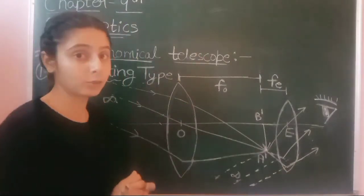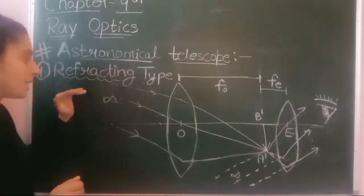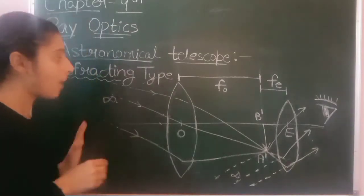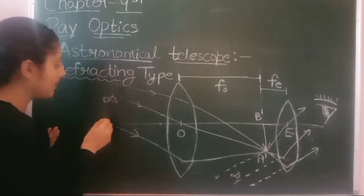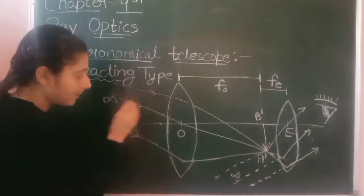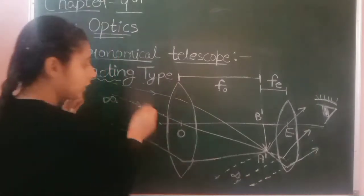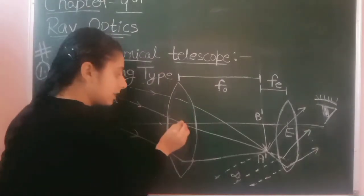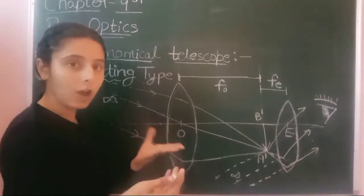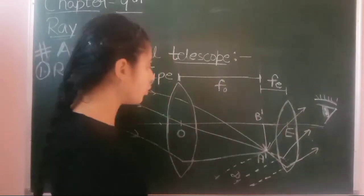In the refracting type telescope, the object is placed at infinity. So here are the infinity-stage rays. One ray goes straight through the optical center of the objective and continues straight.